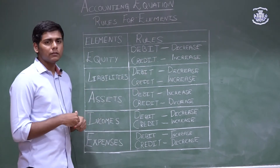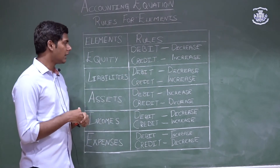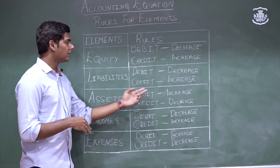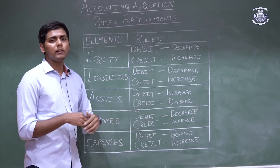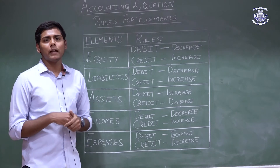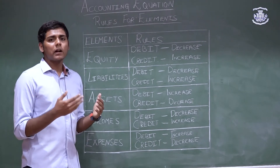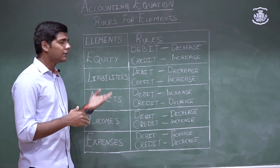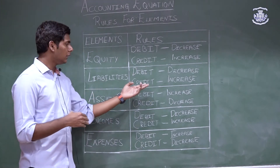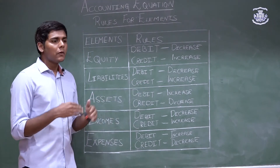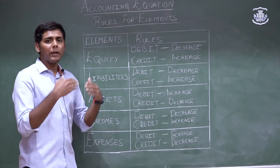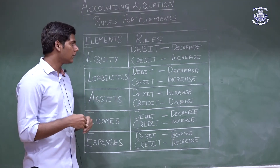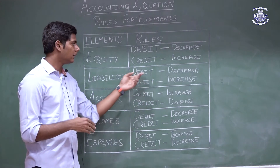For liabilities, the rule is also debit when it decreases and credit when it increases. For example, with a bank loan: when a company takes a bank loan, the value of liabilities is increasing, so we need to credit the transaction. Whereas when you pay back the bank, the value of the liability decreases, so we record it as a debit entry.